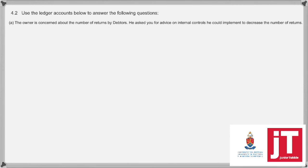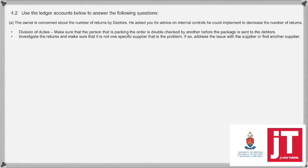The theory part of this question: they say use the ledger accounts and answer the following questions. The owner is concerned about the number of returns by the debtors. Give advice on how he can decrease the number of returns. This is about internal control measures to make sure that the correct stock is delivered to your debtors. First of all, division of duties — but you have to explain it. When we divide duties for this specific control, you will make sure that the person packing the order is checked by another person before it's sent out. And then you can investigate your returns and make sure it's not a specific supplier that's the problem. If it is, you will investigate that supplier, address the matter with them, or find another supplier.